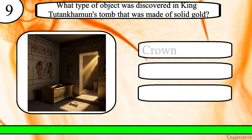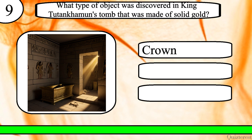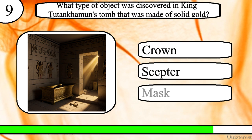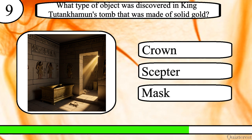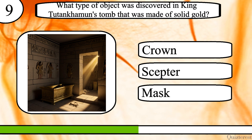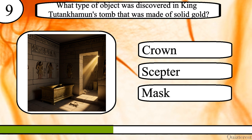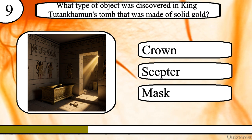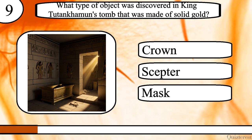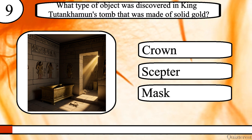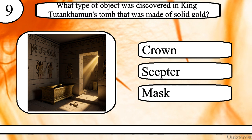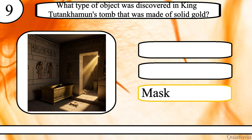Question 9. What type of object was discovered in King Tutankhamun's tomb that was made of solid gold? Crown, scepter or mask? The correct answer is mask.